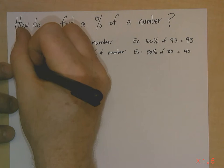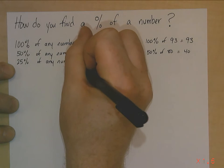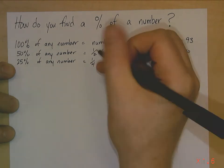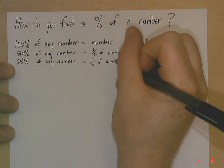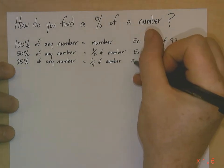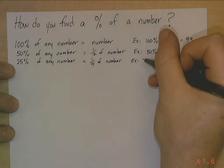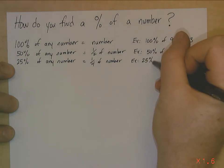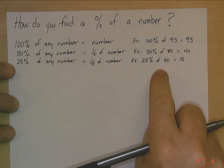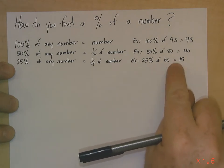25% of a number is going to be a quarter of that number. It's one-fourth of the number. Another way of thinking about that is you take a number and divide it by 4. So, again, let's pick 60. So 25% of 60 is going to equal 15. And how do I know that? Well, I know that this is one-fourth. One-fourth of 60, or 60 divided by 4, equals 15.